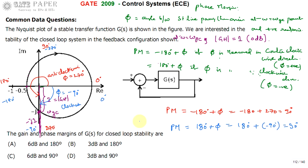So in both methods the phase margin is 90 degrees and the gain margin is 6 dB. Therefore, the right answer for this question is option C.